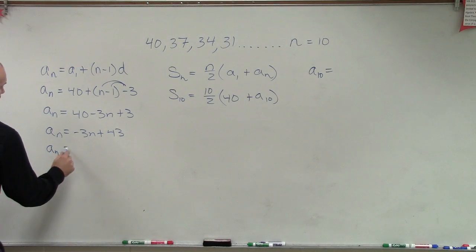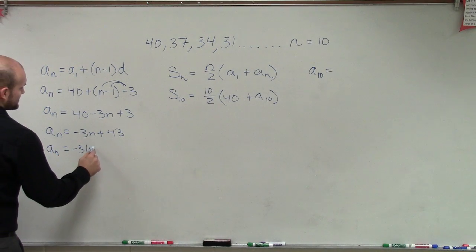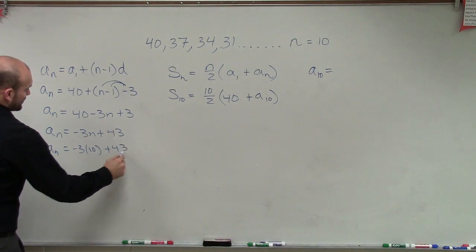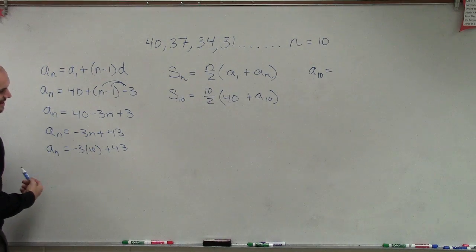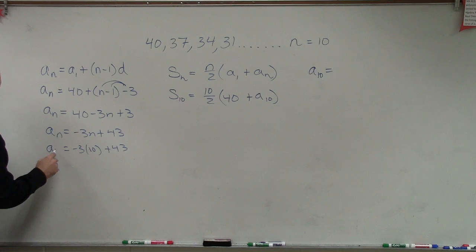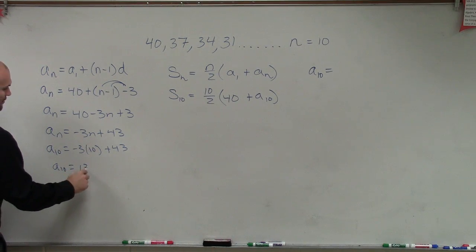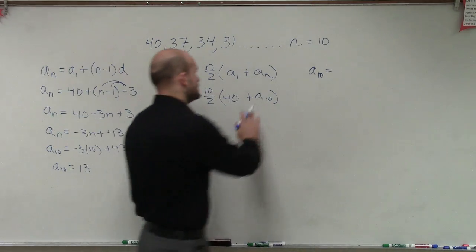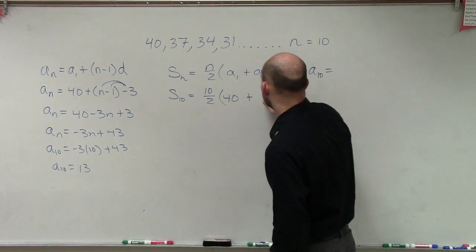Now we have a sub 10 equals negative 3 times 10 plus 43. Negative 3 times 10 is negative 30 plus 43 is 13. So a sub 10 equals 13. So now we can plug in that value in for a sub 10.